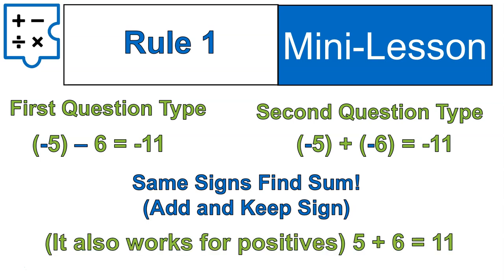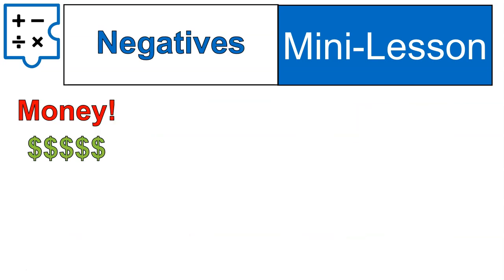This also works for positive numbers. The signs are the same: positive 5 plus positive 6 gives you positive 11. You find the sum, add the numbers, and keep the sign of a positive. It's the same rule for negatives. That's our first rule for today when adding numbers that have the same sign.